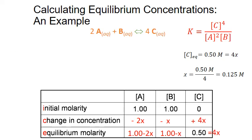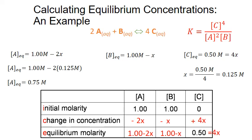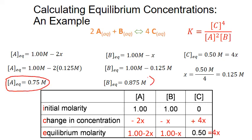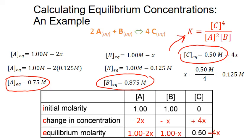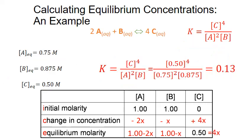We substitute this value of x into the equations for the equilibrium concentrations of A and B. For A: 1 minus 2 times 0.125 equals 0.75 moles per liter. For B: 1 minus 0.125 equals 0.875 moles per liter. Finally, we take these equilibrium concentration values combined with the measured concentration for C and substitute all of them into our equilibrium expression to solve for K, giving a final value of 0.13 for this reaction.